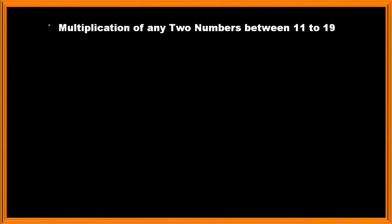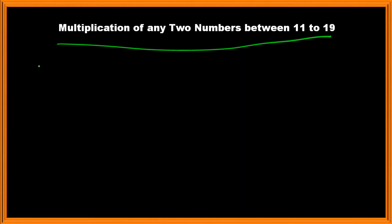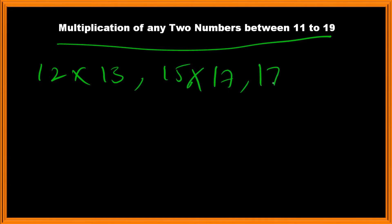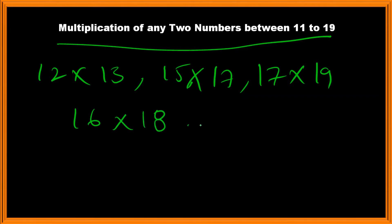In this video we're going to discuss a simple trick of speed mathematics: multiplication of any two-digit numbers between 11 to 19 — for example, 12 multiplied by 13, 15 multiplied by 17, 17 multiplied by 19, or 16 multiplied by 18, and so on. Let's go and look at the concept behind it.